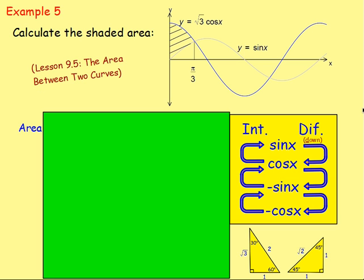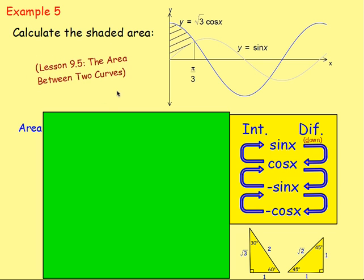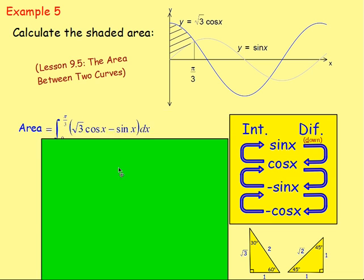Example 5: calculate the shaded area. This is the area between two curves — if you're unsure, look back to lesson 9.5 in my videos on area between two curves. For the area between two curves you integrate (top curve minus bottom curve). The top curve is y = √3cos(x) and the bottom is sin(x). We integrate between 0 and π/3, so: integrate from 0 to π/3 of (√3cos(x) − sin(x)) dx.